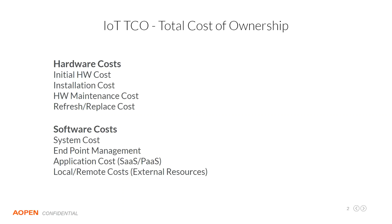I did want to mention some things in terms of software and system costs as well. When you have an edge solution, your initial hardware costs are a factor, along with installation costs, maintenance costs, and then the refresh-replace costs. Software costs — probably more familiar — include the system, endpoint management if that's part of your solution, and then the primary application. The main conversation around this technology is local versus remote costs: how many resources do you actually need to place on the edge?